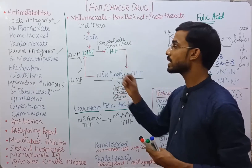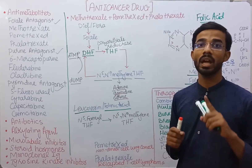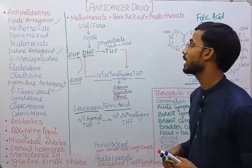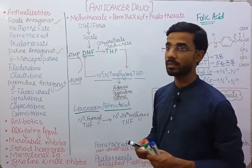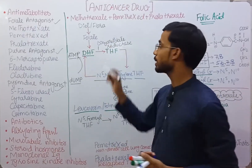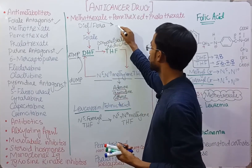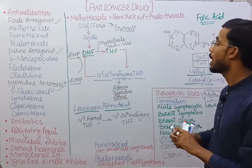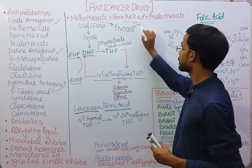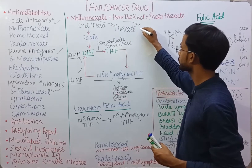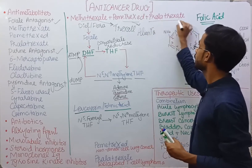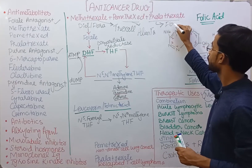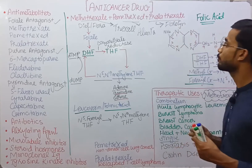Folate antagonists are drugs which interact with or inhibit the normal mechanism of folate. The first one is methotrexate, whose brand name is Trexall. Pemetrexate's brand name is Alimta. And pralatrexate's brand name is Folotyn.